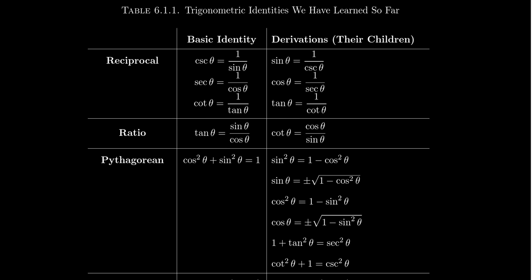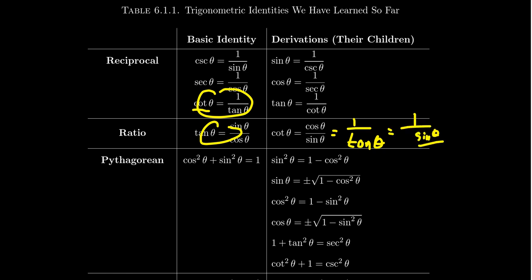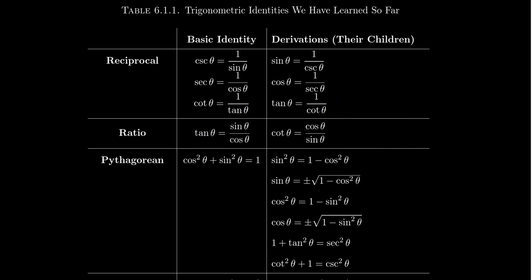When it comes to the ratio identity: since tangent can be written as a ratio of sine and cosine, and since cotangent is the reciprocal of tangent, if we combine these identities together — 1 over tangent is cotangent, and tangent is sin/cos — so we get 1 over (sin/cos). Applying the algebraic property of taking the reciprocal of a fraction, you flip it upside down and get cosine over sine. So cotangent θ = cos θ / sin θ.